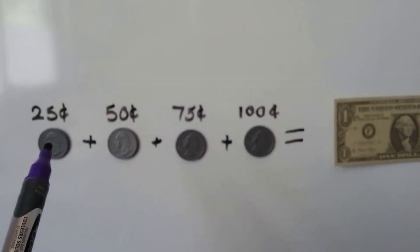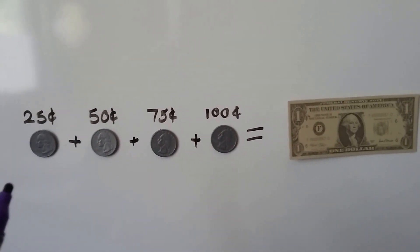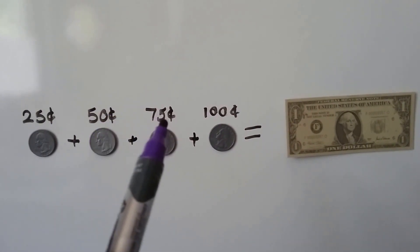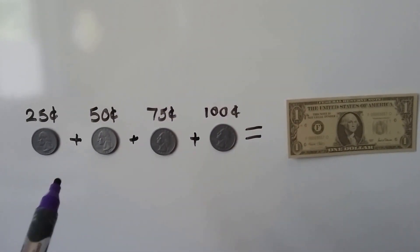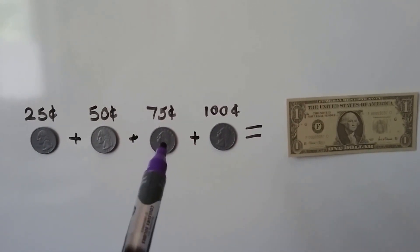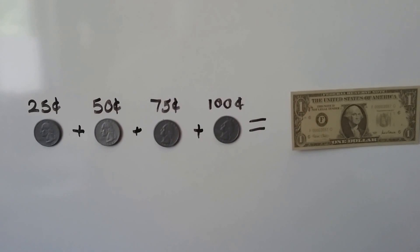Here we've got four quarters, one, two, three, four. We count by twenty-fives. Remember: 25, 50, 75, now we can say 100. 25 cents, 50 cents, 75 cents, a dollar. Four quarters equals one dollar.